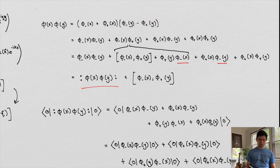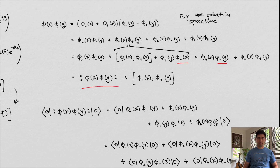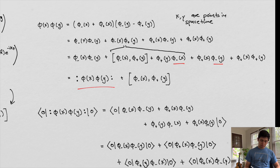We want to remember that x and y are points in space-time, not just points in space — we keep into account the temporal component of these fields. The positive and negative components refer to the creation and annihilation parts of the waves. So we can expand this out by FOILing: we get the minus-minus term, the minus-plus term with y, the plus-minus term, and the plus-plus term.